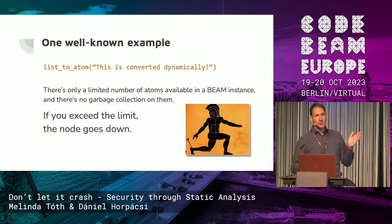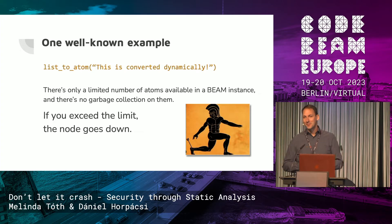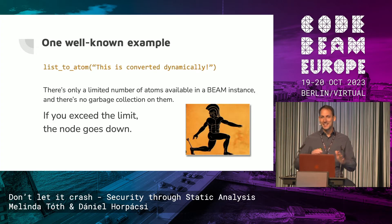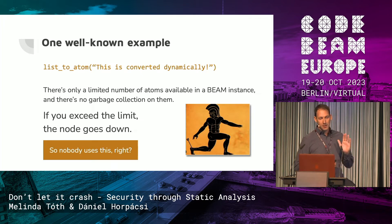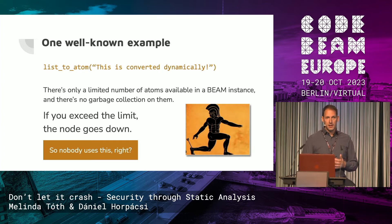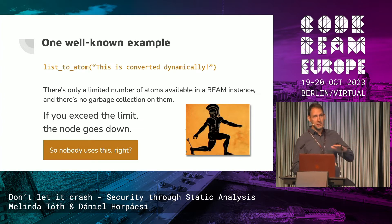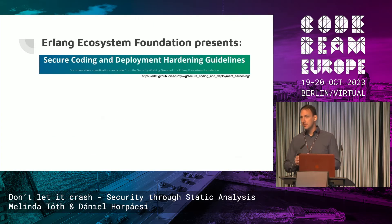You can do two things: one is that you don't create atoms at runtime — you avoid the problem entirely. Or you do it, but you do it with care. Many people do the latter. But you would think that if this is really a risk, nobody uses it. They do. We analyzed the projects and found a lot of instances — maybe not list_to_atom, but binary_to_atom or similar functions that create atoms at runtime.